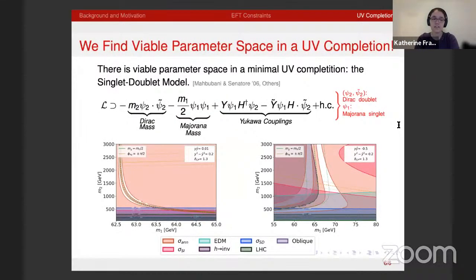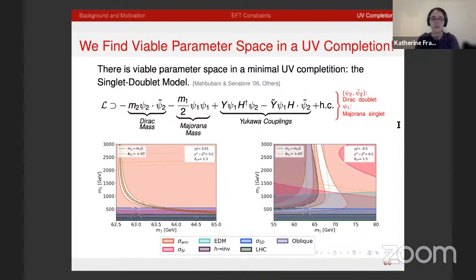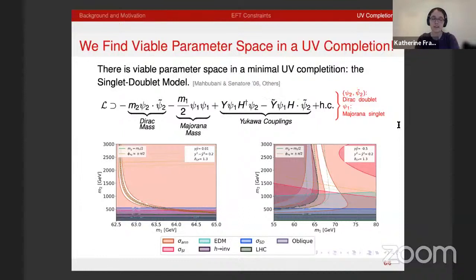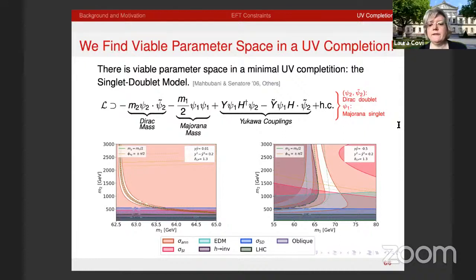Beyond annihilation and spin-independent direct detection, there are constraints from the electron EDM due to CP violation, electroweak corrections from the new doublet, and collider constraints. Analysis in the minimal UV completion — the singlet-doublet model with a doublet psi_2, a Majorana singlet psi_1, and a Yukawa coupling to the standard model Higgs — shows viable parameter space with the same two scenarios: tune the mass in the small coupling case, or tune the phase in the large coupling case. CP violation is thus a viable alternative to mass resonance, probeable by upcoming experiments.